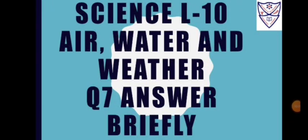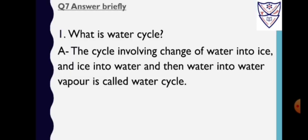Science lesson number 10: Air, Water and Weather. Question 7, answer briefly. Number one: What is water cycle? Answer: The cycle involving change of water into ice, and ice into water, and then water into water vapor, is called water cycle.